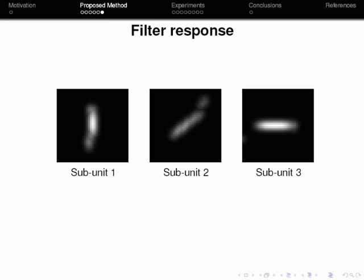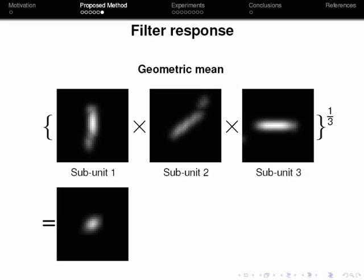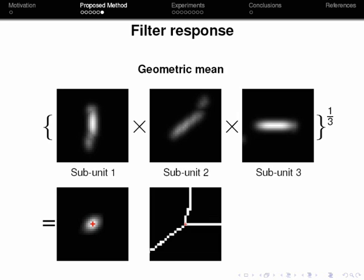These images are the responses of the three subunits. The filter response is then defined as the geometric mean which involves the elementwise multiplication of all subunit responses and then we take the nth root of the result where n is the number of subunits. In this case this operation results in the image shown at the bottom of the slide. From this result image we choose the point with maximum value and which correctly matches the point that was specified by the user.